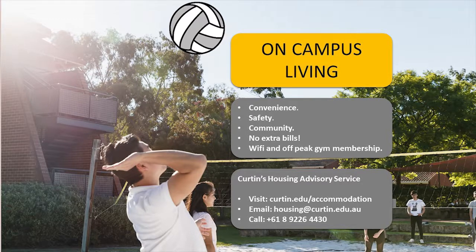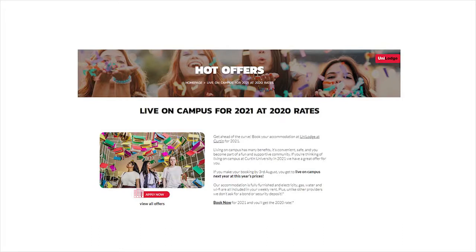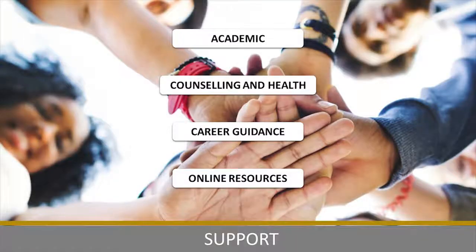For students streaming in from regional WA or currently boarding in Metro WA, there is on-campus accommodation — great because you can just roll out of bed and walk straight into class. UniLodge have a fantastic promotion on at the moment: if you apply before the 3rd of August for accommodation for next year, you can receive it at this year's rate. In your two weeks of orientation before starting at Curtin, you'll learn about the support available: academic support for essays and referencing, counselling and health services, careers team for part-time jobs or volunteering, and a large online community and resources.